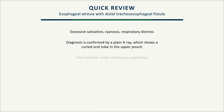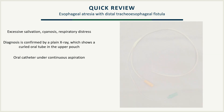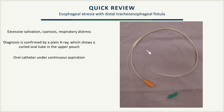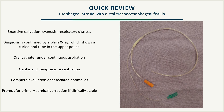Once EA is confirmed, the patient must be kept with an oral tube under continuous aspiration. A Replogle tube is used, and if not available, one can be easily manufactured with a 4 French aspiration catheter introduced through the lumen of a 10 French catheter. If the patient presents with respiratory distress and needs ventilatory support, it must be under low pressure to avoid gastric distension or even rupture. Active search for other possible congenital malformations is mandatory and, if there is clinical stability, the patient is prompted for primary surgical repair.